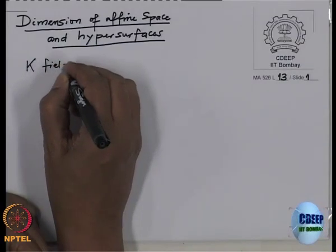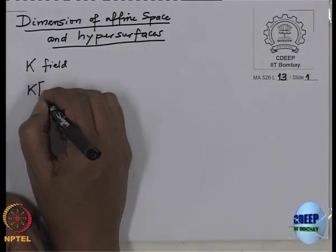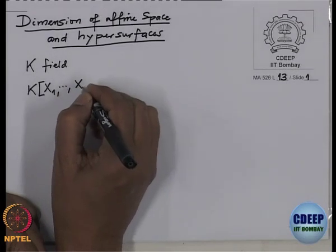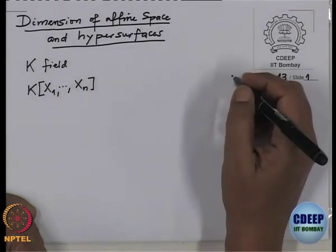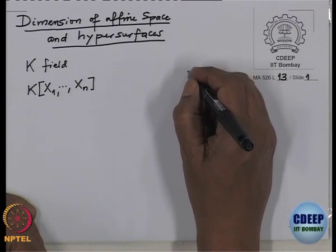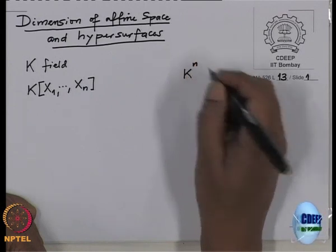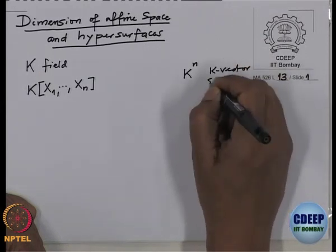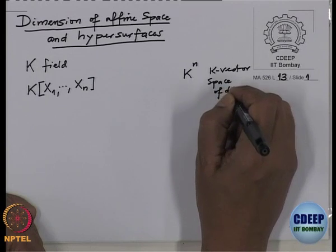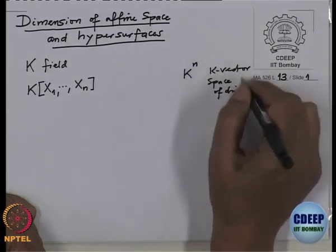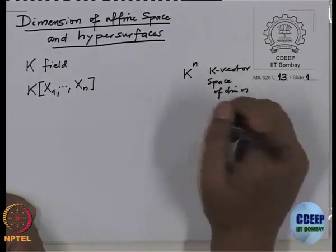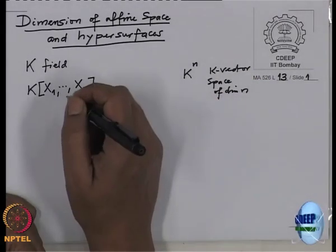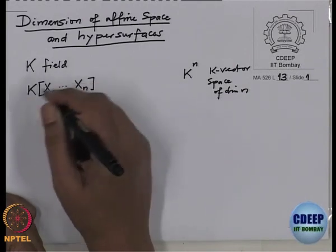I want to recall: if you have a field K, then you have a polynomial algebra over a field in n variables. In linear algebra, the corresponding object is the vector space of dimension n, K^n — this is a K-vector space of dimension n. This is usually called an affine n-space, and in commutative algebra or algebraic geometry it corresponds to this polynomial algebra.